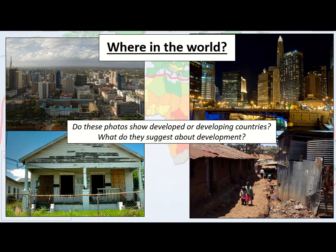Not everywhere is as developed as everywhere else within a country. Using the UK as an example, parts of Norwich are extremely well developed — wealthy, with lots of prosperity — whereas some parts of Glasgow where the old tenements were have some of the lowest life expectancies anywhere in the western world. The average life expectancy in a certain part of Glasgow is below 60, whereas the UK as a whole is about 80 to 81. So development is something where you can't just label a place as developed or developing — there are different scales and levels across a country.